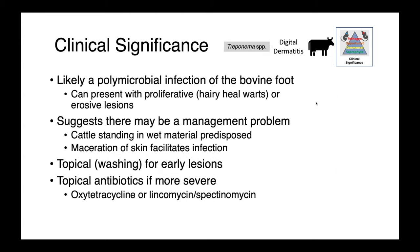Our last genus is Treponema as a cause of digital dermatitis in cattle. This is a polymicrobial infection of the bovine foot that can present with either proliferative or erosive lesions. Proliferative lesions are colloquially known as hairy heel warts. These infections are generally treated topically; for early lesions, washing and hoof trimming can be sufficient, while for more severe disease, antibiotics may also be warranted.